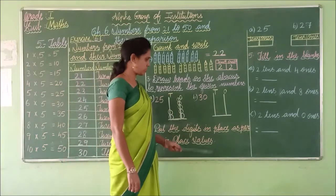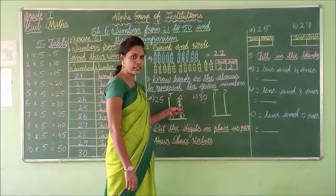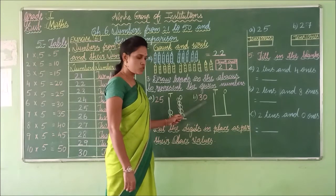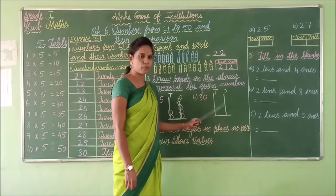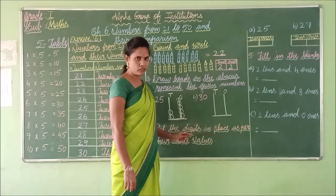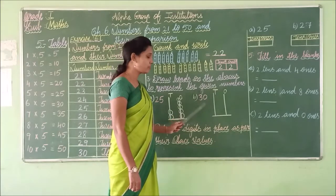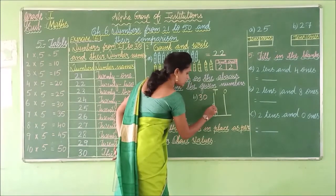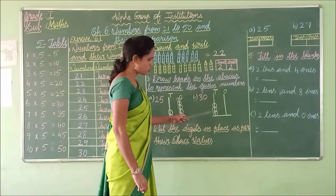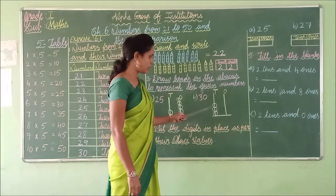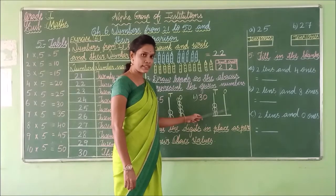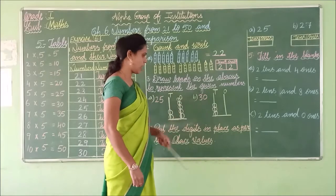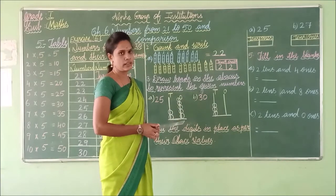Now move on to the next problem. What number is this? 30. In 1's place we have 0, so you should not draw any beads — it should be empty. In 10's place we have 3, so in 10's place alone we have to draw 3 beads: 1, 2, 3. In 1's place it is empty because the number is 0.